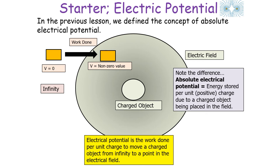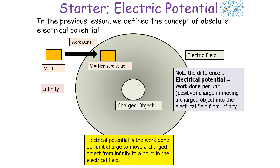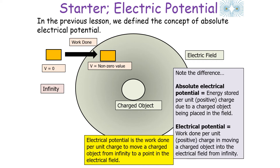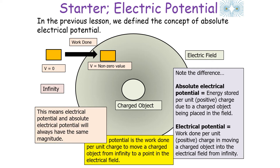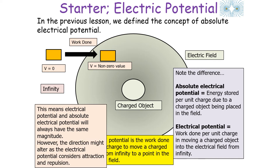Note the difference: absolute electrical potential is the energy stored per unit positive charge due to a charged object being placed in the field, but electrical potential is the work done per unit positive charge in moving a charged object into the field from infinity. Electrical potential and absolute electrical potential will always have the same magnitude because you're subtracting zero from the value at infinity, though the direction may alter as electrical potential considers attraction and repulsion.